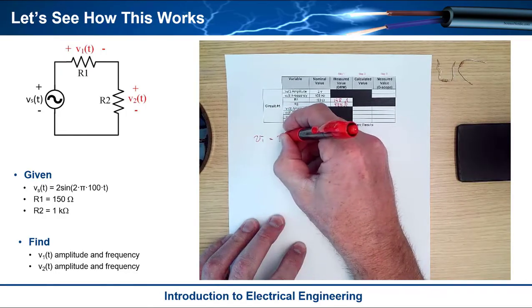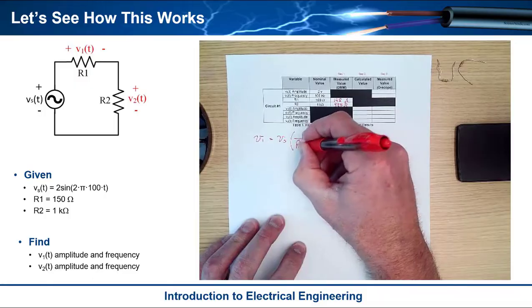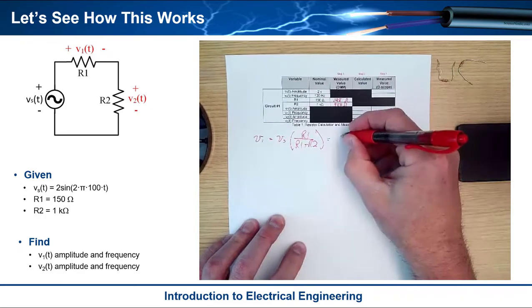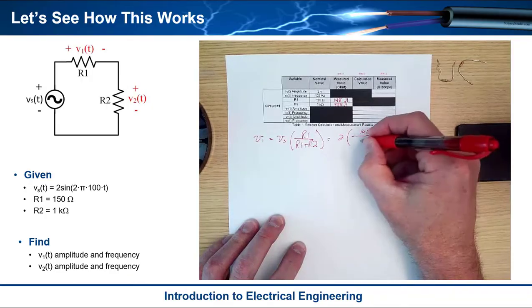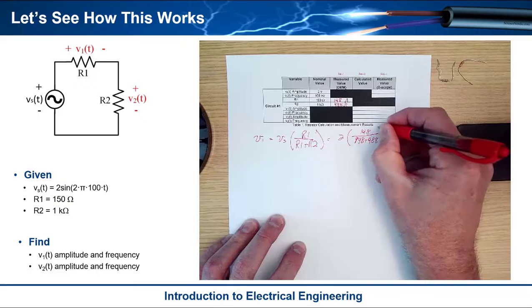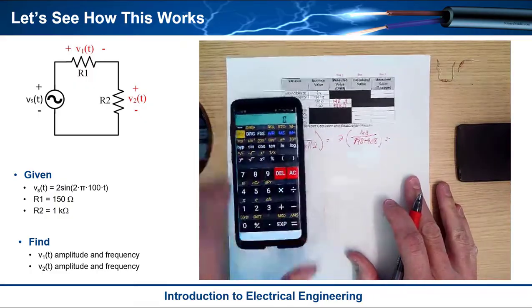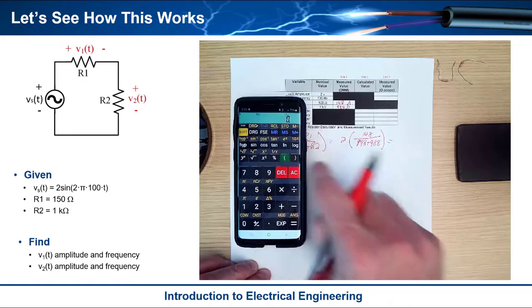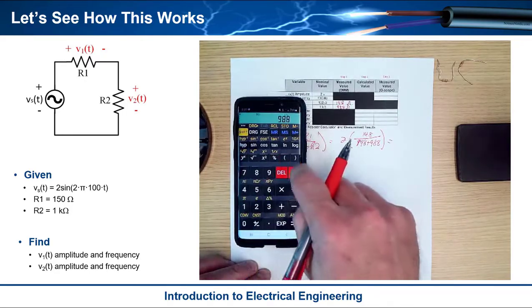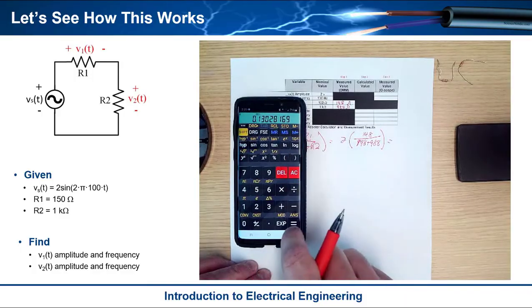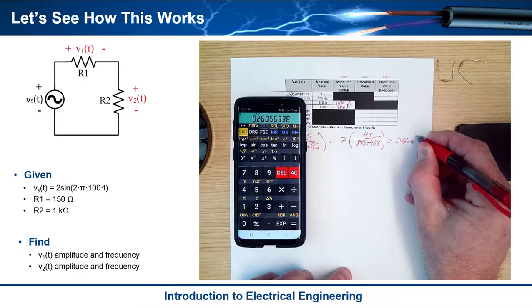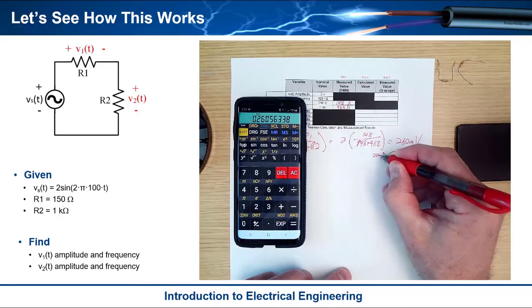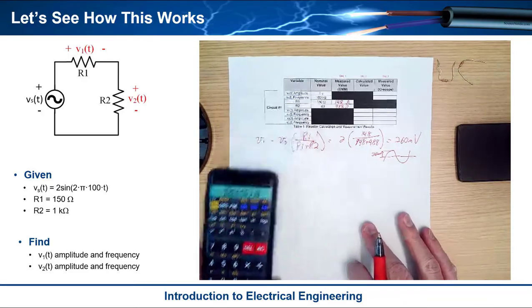I know the sine wave component, the frequency is going to be the same in all components. The phase shift is going to be the same because I only have resistors in this circuit and a source. All I need to do is use the amplitude in my voltage divider expressions. V1 equals VS multiplied by R1 over R1 plus R2. I'm going to use my real values: 2 multiplied by 148 over 148 plus 988. I end up with 260 millivolts.